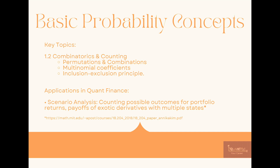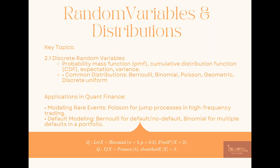You also need to study permutations, combinations, and multinomial coefficients. These are used in scenario analysis to calculate the payoff of exotic derivatives which have multiple states. Random variables and distributions is the most important and most basic topic you should know in probability and statistics.